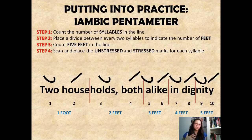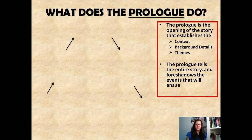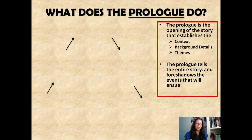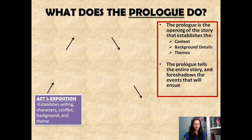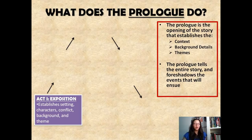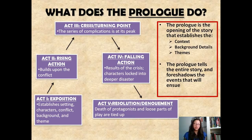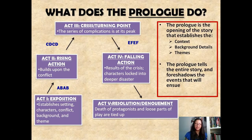What does the prologue do? The prologue has a particular function in the story — it provides you with context, background, details, and themes. It also foreshadows things that are going to ensue throughout the play. It is reminiscent of a story plot diagram, starting with the exposition, the rising action, the crisis or turning point, the falling action, and the resolution or denouement. By plotting the stanzas of the sonnet onto the story plot diagram, you can see that it actually falls into this structure.